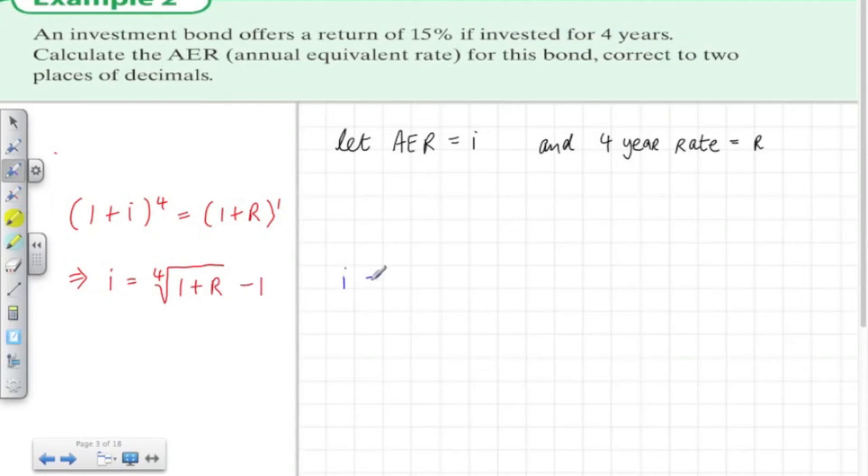We should be familiar with this type of formula. Therefore i is equal to the fourth root of 1.15 minus 1. Substitute this into the calculator and we get 0.0356.